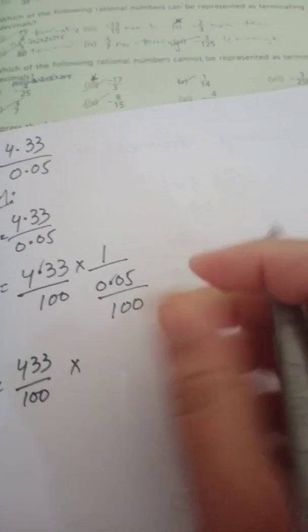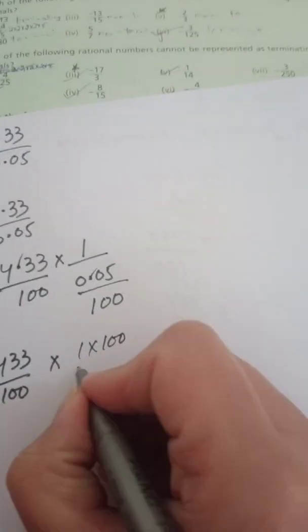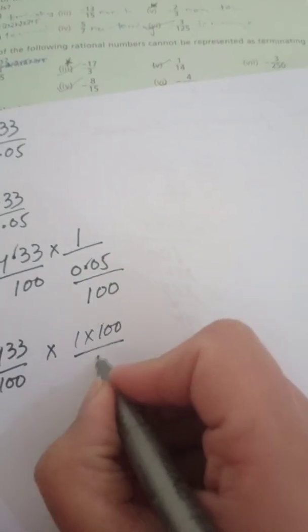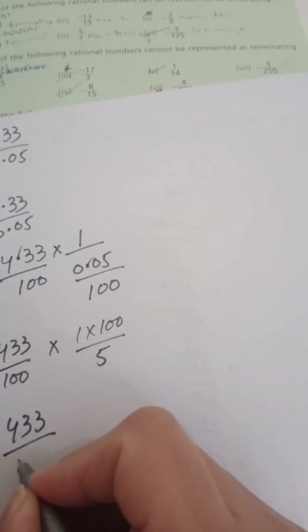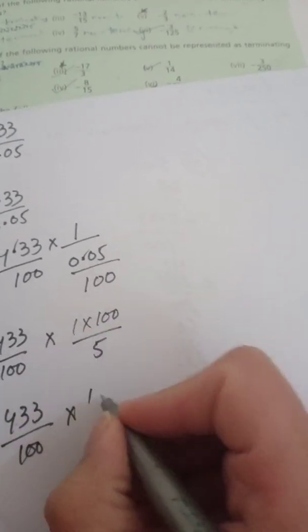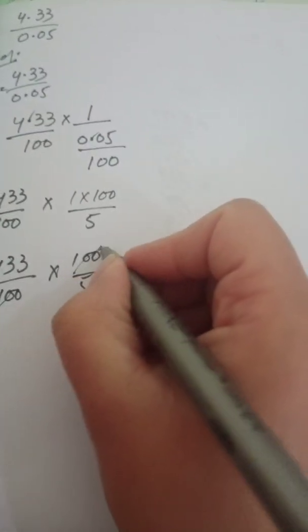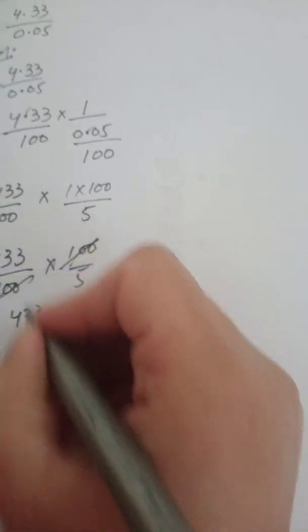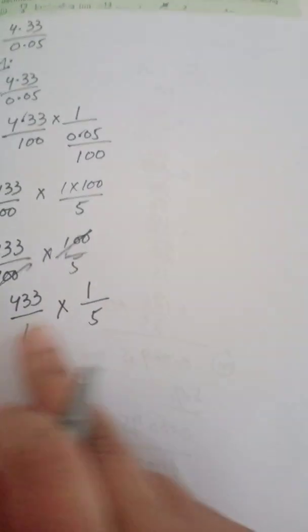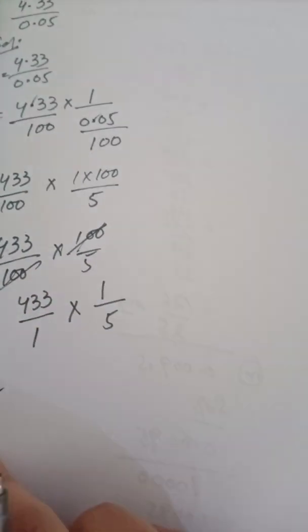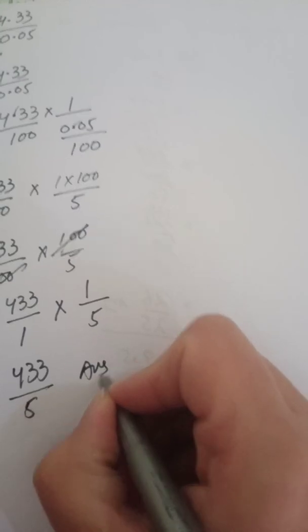We write it as 433 upon 100, multiplied by the reciprocal of the denominator. The third term goes up and multiplies the first term, so 100 comes up. For 0.05, two digits give two zeros: 005 upon 100, but the leading zeros are meaningless so we write 5. We now have 433 upon 100 multiplied by 100 upon 5. The two 100s cancel, leaving 433 upon 5, which is the final answer.